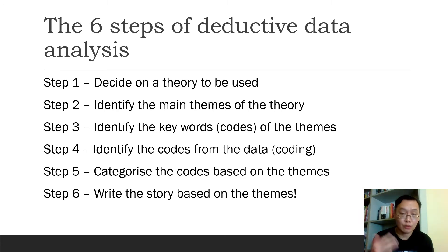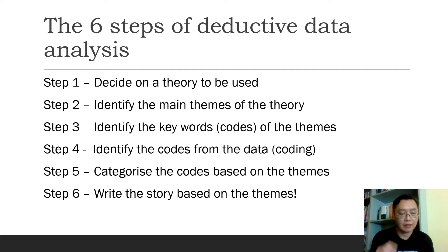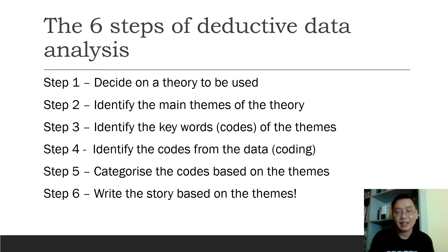Step four: you need to identify the quotes from the data. After you've got all the data and transcribed it, you go through the data and do what we call coding. Step five: you need to categorize the quotes based on the themes — that is, after you've done all the coding.